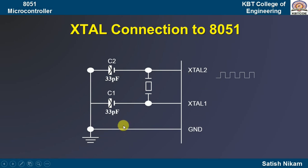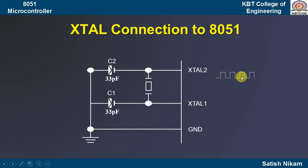If you want to verify the 11.0592 megahertz frequency, you can check it on pin number 18. If you take the output from that pin and check it on the CRO, you can see the frequency of 11.0592 megahertz. This is one option — using a quartz crystal to apply the frequency to your 8051 microcontroller.